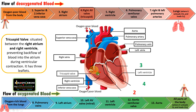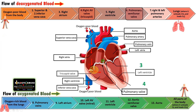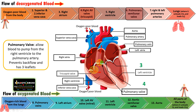The next valve is the pulmonary semilunar valve. The blood from the right ventricle enters into the pulmonary artery, and this is regulated by the pulmonary valve. This valve is located between the right ventricle and pulmonary artery. It allows blood to pump from the right ventricle into the pulmonary artery, prevents back flow, and has three leaflets. These two valves are involved in regulating the flow of oxygen-poor blood.